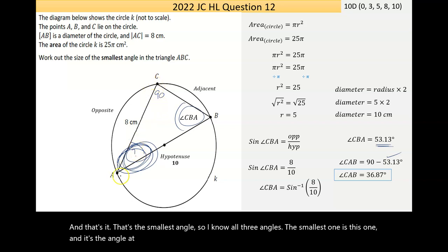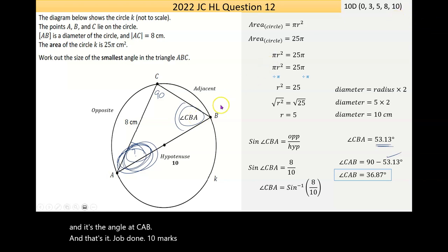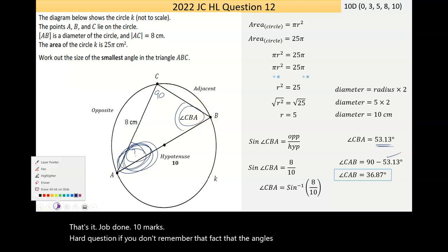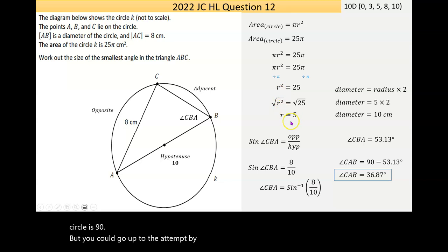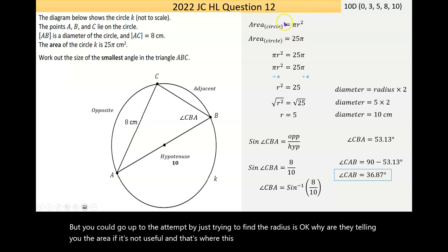And that's it. Job done. 10 marks. Hard question if you don't remember that fact that the angles of diameter of the other side of the circle is 90. But you could have got to the attempt by just trying to find what the radius is. Like, why are they telling you the area if it's not useful? And that's where this equating against the area formula strategy would come into play.